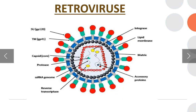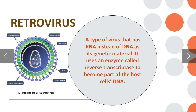Retroviruses — you can see here in the diagram: integrase, lipid membrane, matrix, accessory proteins, reverse transcriptase, single-stranded RNA genome, protease, capsid, TM, and SU. A retrovirus is a type of virus that has RNA instead of DNA as its genetic material. It uses an enzyme called reverse transcriptase to become part of the host cell's DNA.